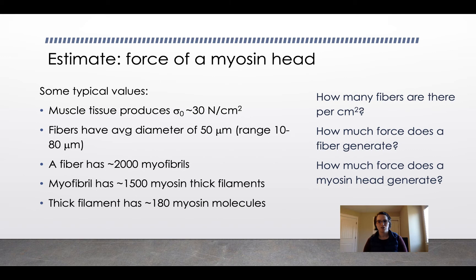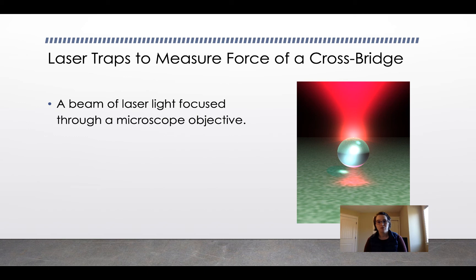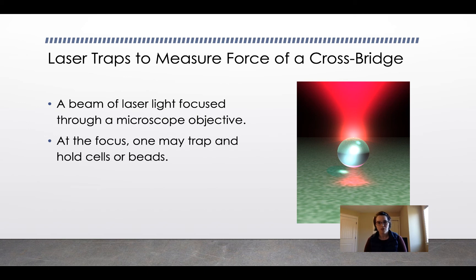But how would you compare that to an actual measurement? Myosin heads are tiny. Scientists have relatively recently developed a technique using laser traps to measure the force of a cross-bridge. Photons have momentum and therefore can create force. A focused beam of photons can create measurable forces on very small molecules. A laser beam is focused through a microscope objective lens, and at the focus you can trap and hold cells or beads coated with something like fibronectin. This acts as a force transducer to measure how displaced the cell or bead is from the center of the beam.